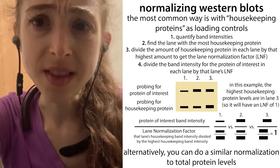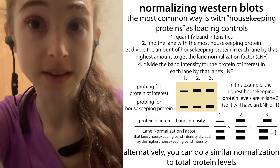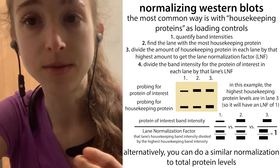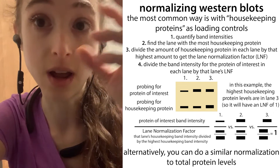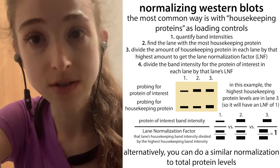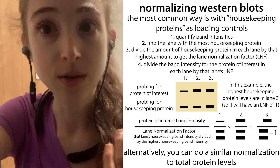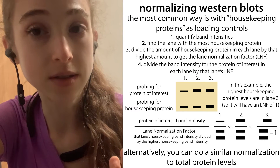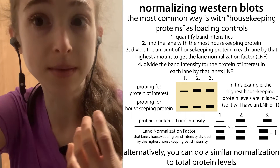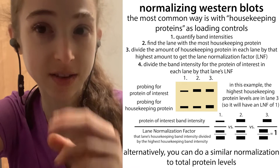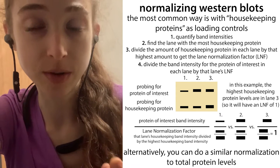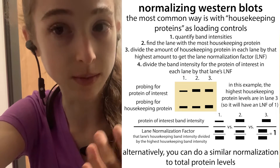Increasingly common is to normalize to total protein levels — dividing by the normalized amount of total protein instead of a reference protein. The problem is that techniques typically used to measure total protein on a gel can interfere with the blotting process, but there are reversible stains like Ponceau, as well as stain-free technologies where fluorescent material in the gel binds to proteins, allowing you to measure the amount of protein both before and after transfer. This is called total protein normalization, or TPN.